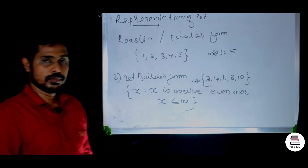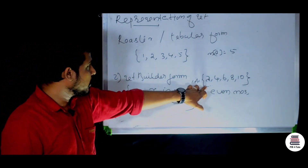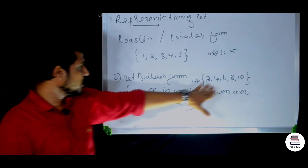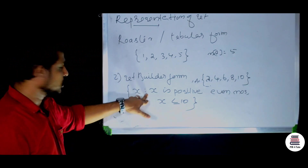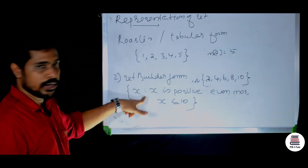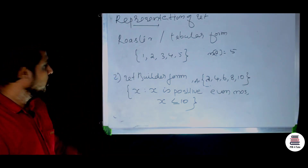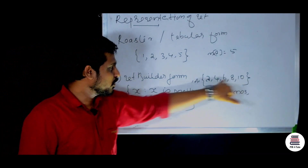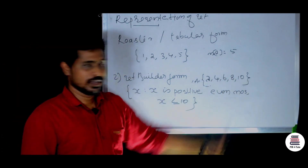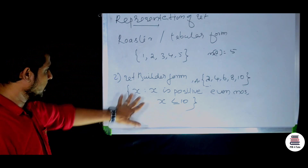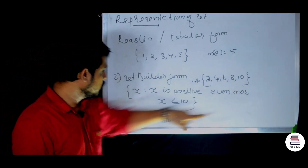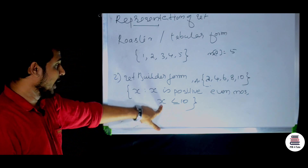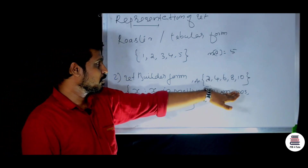In set builder form, capital A can be represented as A = {x : condition on x}. For example, x is a positive even number, or x is a positive integer where the condition is x is less than or equal to 10.